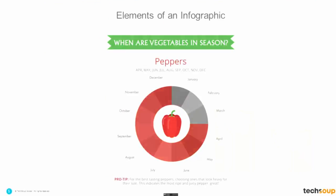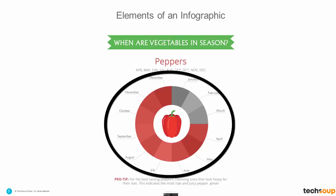Here's another one. This is from Greek Body Codex, a weight loss and strength training site. It lists when popular fruits and vegetables are in season. Again, simple delivery of data — peppers are in season from April through December, indicated by the colors applied to those months. Breaking this down, it's simple: an illustrated pepper in the center, a colored wheel of months around it, and copy to put it in context.